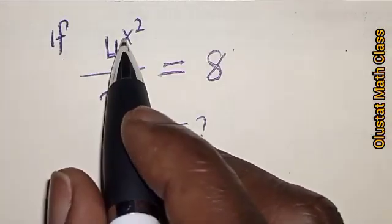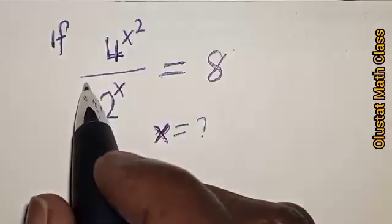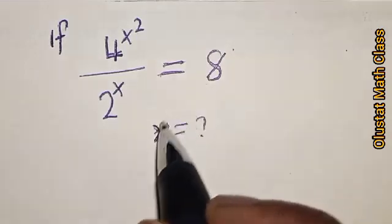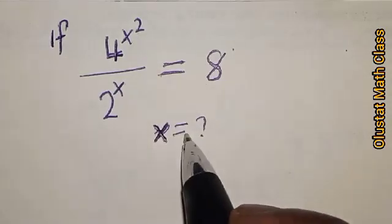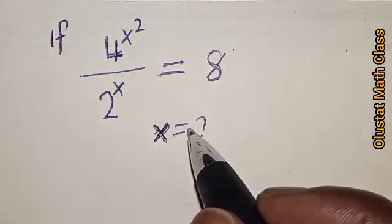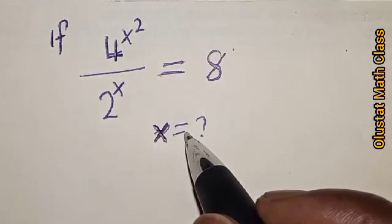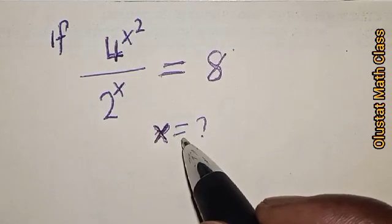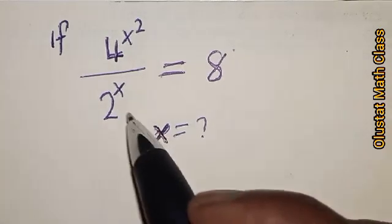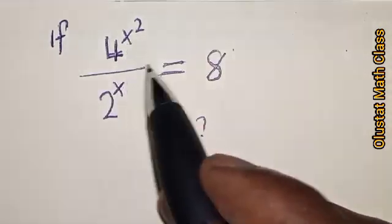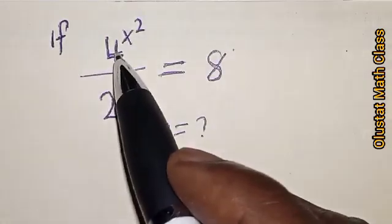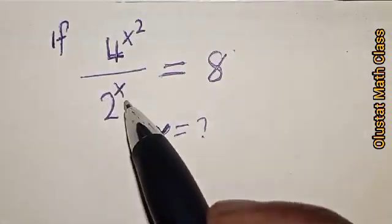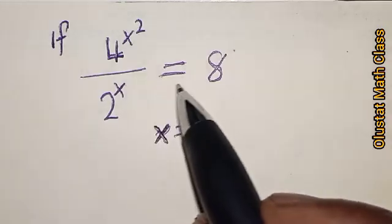If 4 raised to power s squared divided by 2 raised to power s is equal to 8, what is the value of s? Welcome to my class. In today's class, we want to quickly look at how we can find the value of s from this given exponential equation. We have 4 raised to power s squared divided by 2 raised to power s is equal to 8.